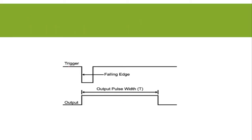Now the trigger signal is normally high, but whenever we bring the trigger signal to low, this is going to change the output of the 555 timer. The trigger signal is at pin 2 and the output of the 555 timer is at pin 3. So whenever we change the input at pin 2 from high to low — that is, we apply a trigger signal — the output at pin 3 is going to change from low to high.